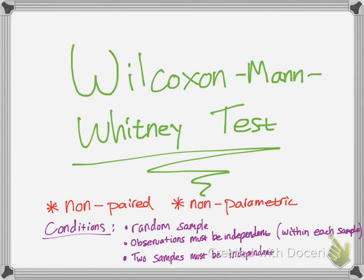Hello YouTube! Today we'll be talking about the Wilcoxon-Mann-Whitney test. This is a non-paired, non-parametric test. The conditions in which you would use this test: you must make sure that the sample is random, and that the observations within each sample are independent, as well as the samples that are independent from one another, so that one thing might not indirectly cause another.